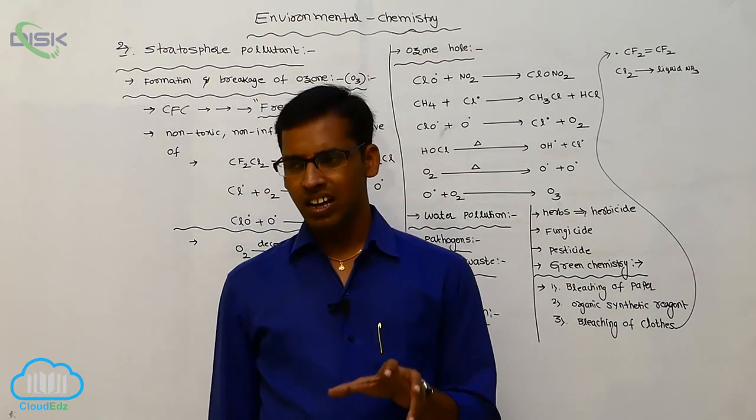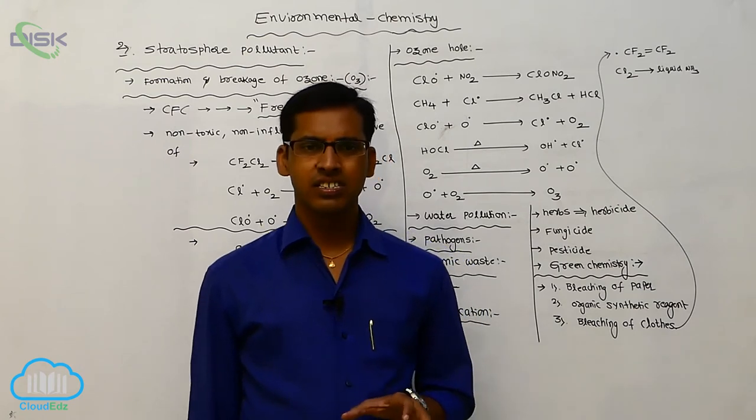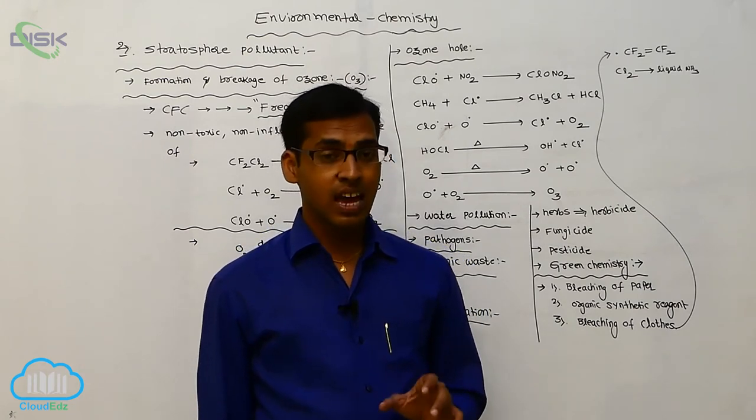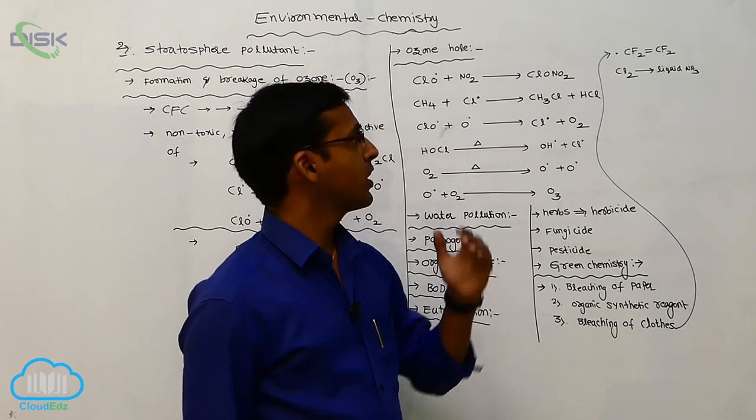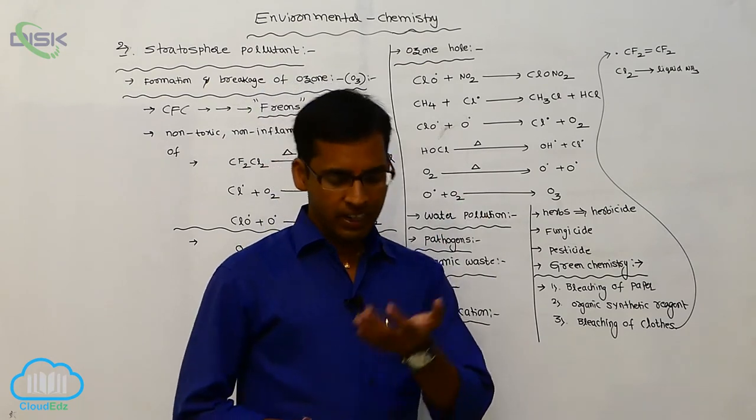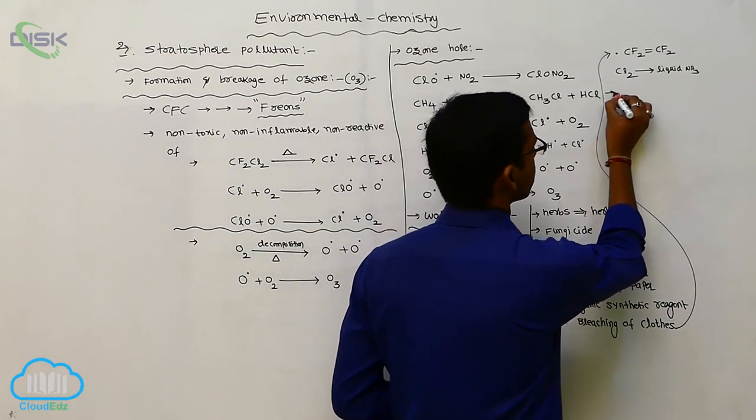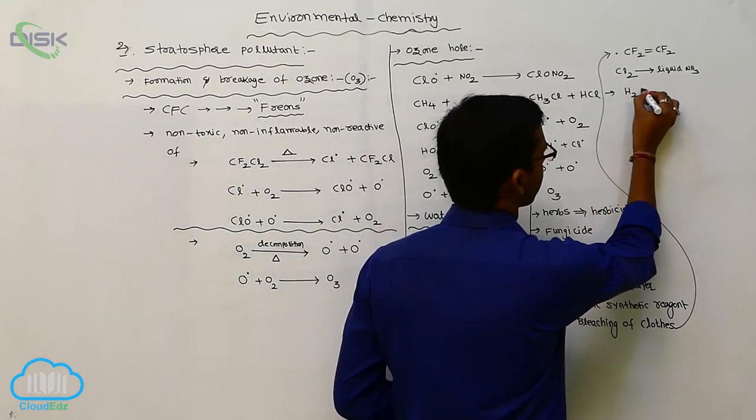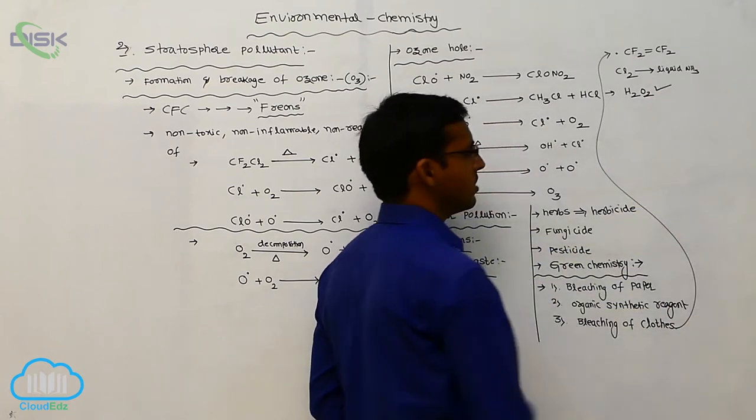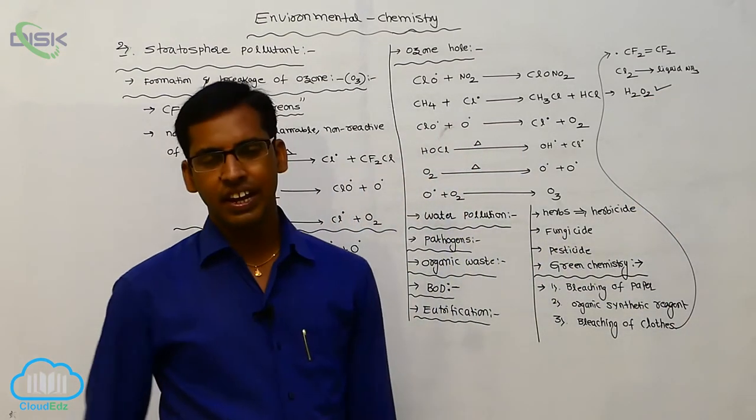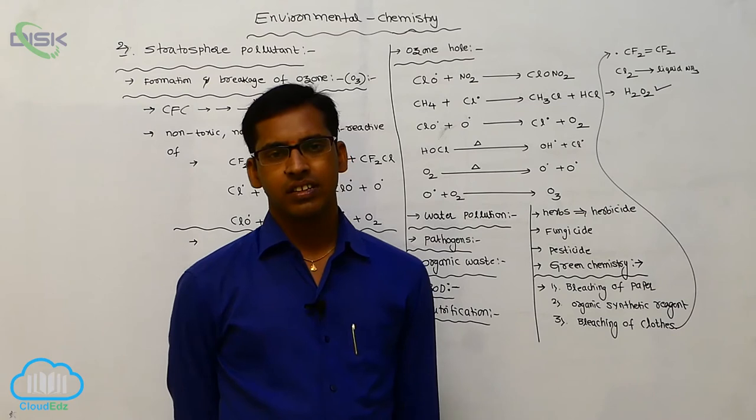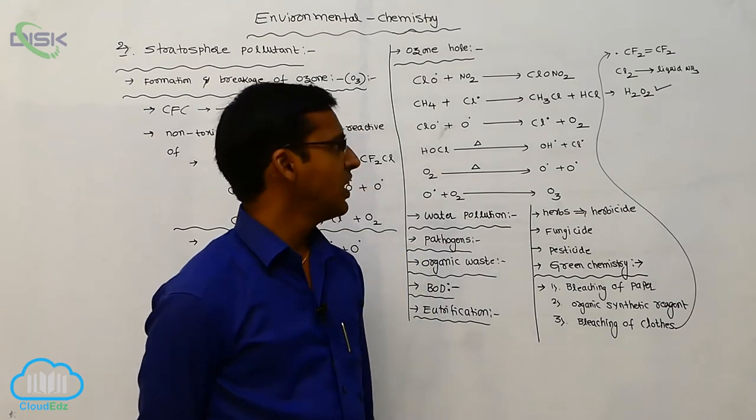It also causes damages. But these damages are very less when compared to tetrafluoroethylene. But nowadays, for bleaching of cloth, we use hydrogen peroxide. This does not cause any defects. So this is your green chemistry.